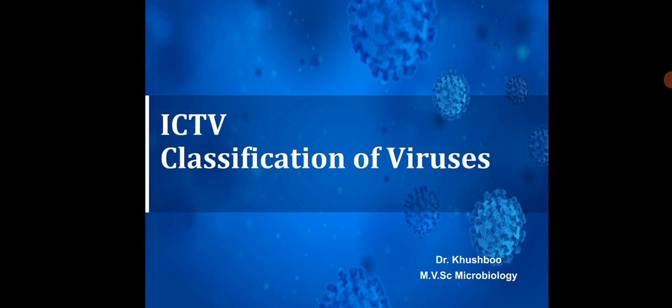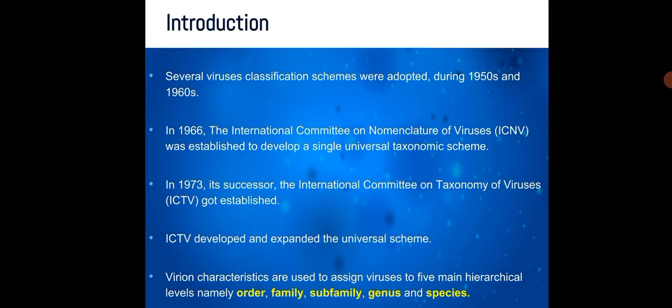ICTV classification of viruses. Several virus classification schemes were adopted during the 1950s and 1960s. In 1966, the International Committee on Nomenclature of Viruses was established to develop a single universal taxonomic scheme. In 1973, its successor, the International Committee on Taxonomy of Viruses — ICTV — got established.